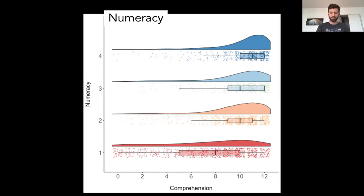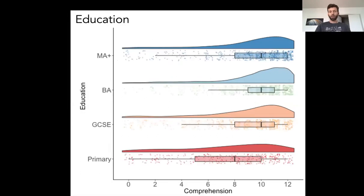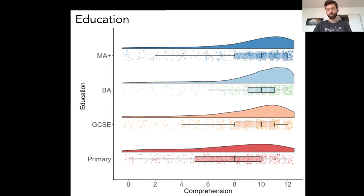There are two potential explanations for that pattern: theory suggests people less skilled with numbers in one domain will struggle in another, but it's also possible that people who click through carelessly will score poorly on both the numeracy test and the comprehension task. We can check this by looking at education level instead — and we see a similar pattern. This lends more credence, because people aren't presumably being lazy about reporting their education level.